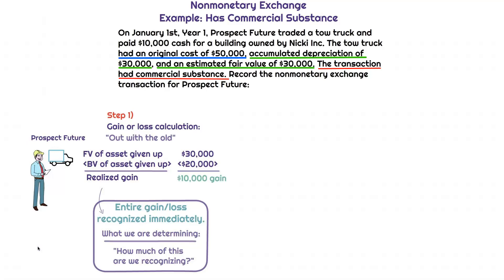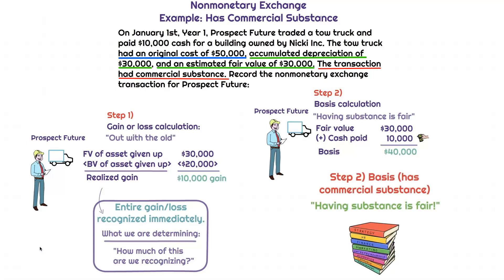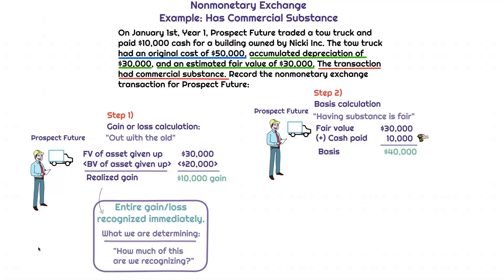Moving on to step two: determining the basis of the asset received. When we have a realized gain in a non-monetary exchange transaction that has commercial substance, we remember 'having substance is fair.' If it has commercial substance, we're focused on 'fair,' meaning fair value. The fair value of the asset given up is where we start when calculating basis — plus any cash paid, minus any cash received. We know $10,000 was paid, so the basis becomes $30,000 plus $10,000, or $40,000.